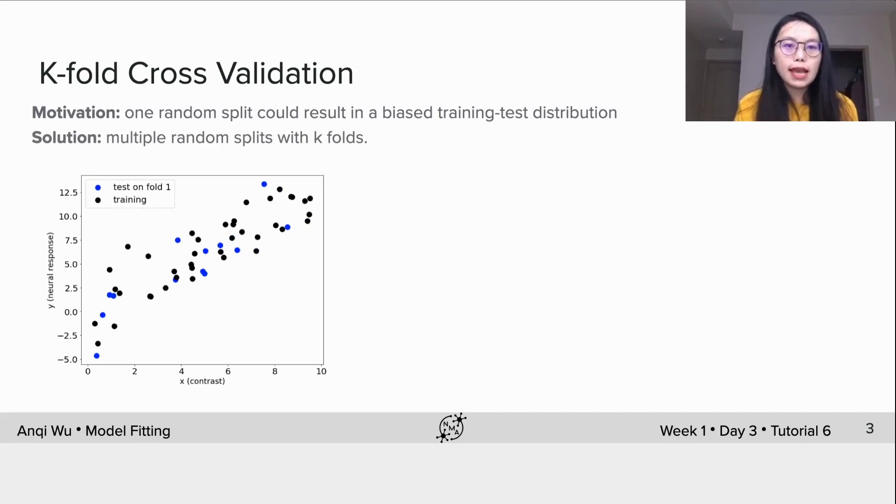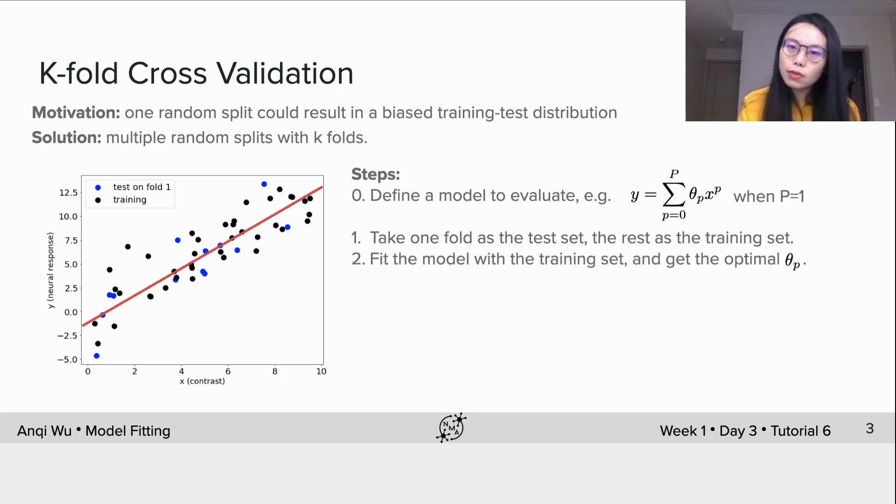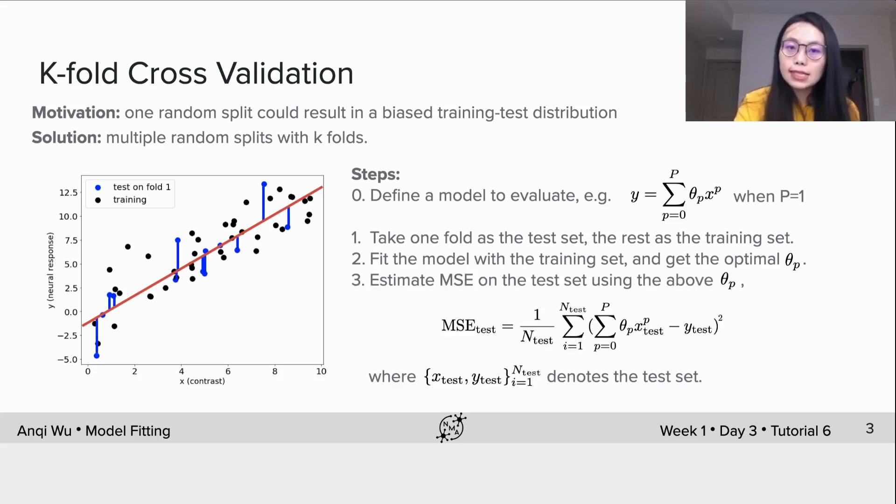Now take one split as an example. Remember to define a model to evaluate at step zero. Here, for example, we evaluate the linear regression model. Step one, we take one fold as the test set and rest as the training. Step two, we feed the linear regression model with the training set and get the optimal theta p. Step three, we calculate the MSE on the test set by using this math equation with the above optimal theta p.